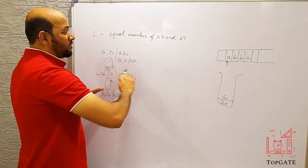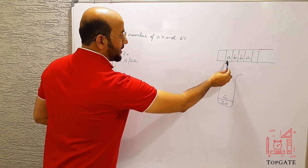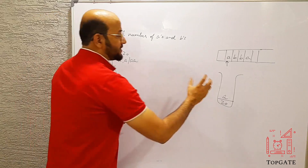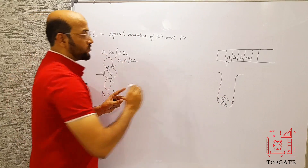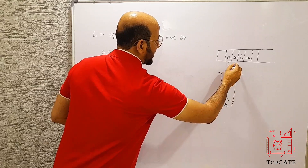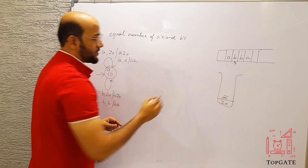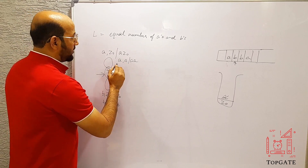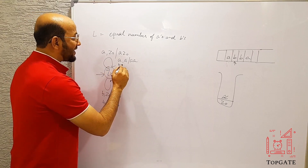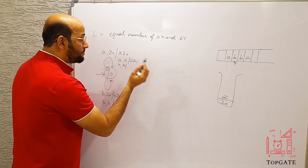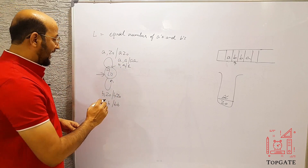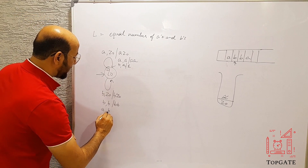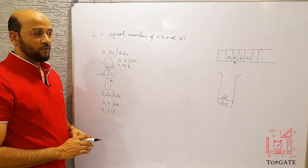Now when all the A's have been pushed and a B comes, we pop the A from the stack. So the transition is: B, A / ε — when B comes and the top stack element is A, we pop it out. Similarly, when A comes and the top stack element is B, we pop it: A, B / ε.